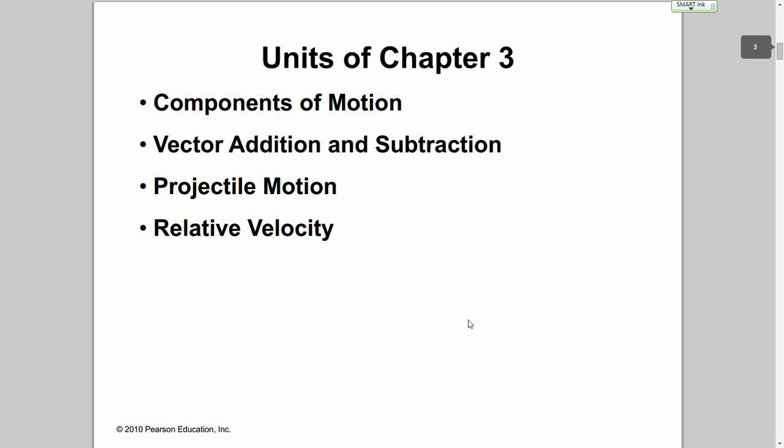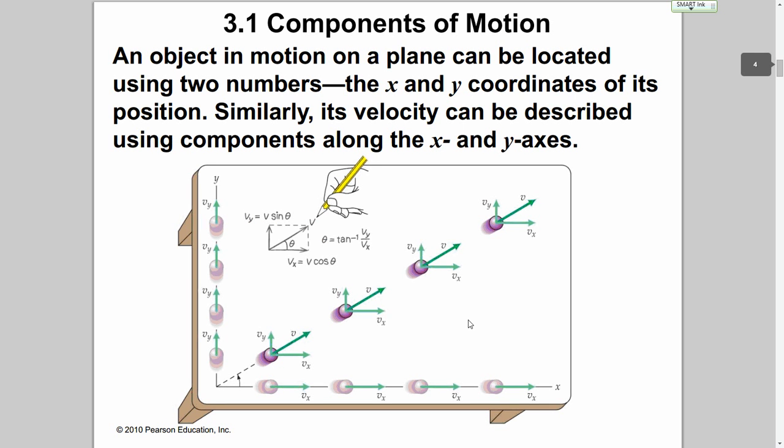Before we can jump into that, we need to know about components of motion, vector addition and subtraction, projectile motion itself, and relative velocity. An object in motion on a plane can be located using two numbers — the x and y coordinates — and that's basically its position.